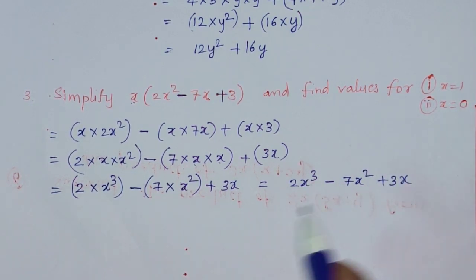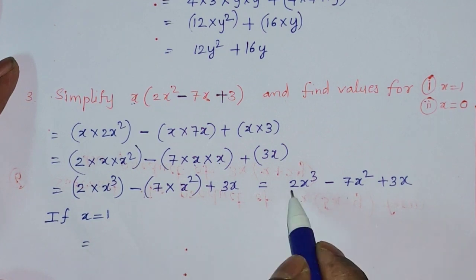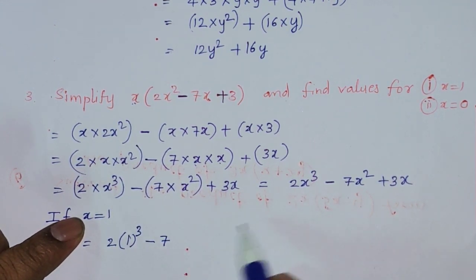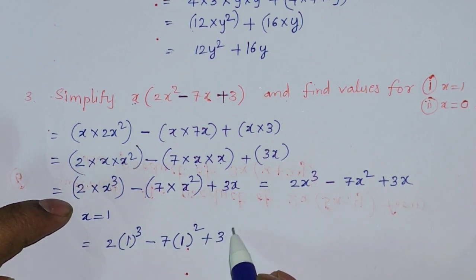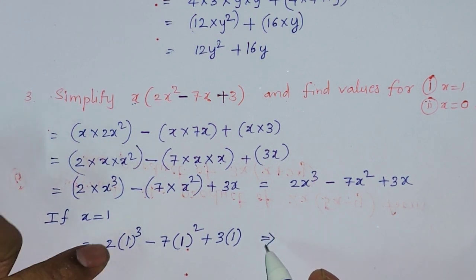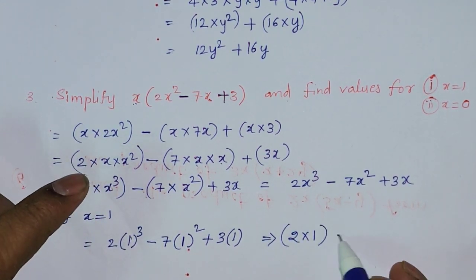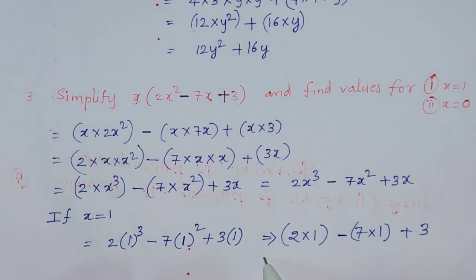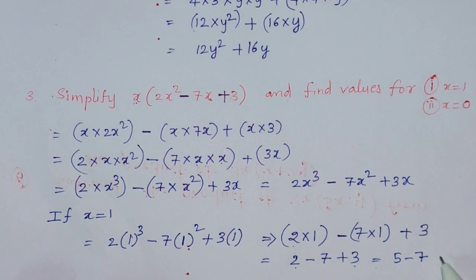Now let's find the value of the expression at x equals 1. Substituting x equals 1: 2 into 1 cubed minus 7 into 1 squared plus 3 into 1. That gives 2 into 1, which is 2, minus 7 into 1, which is 7, plus 3 into 1, which is 3. So 2 minus 7 plus 3 equals 5 minus 7, which equals minus 2.